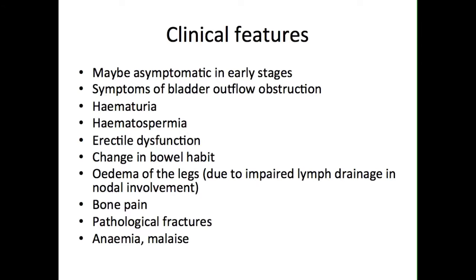These tumours, unlike T3 and T4 tumours, are unlikely to have associated metastases. T3 and T4 tumours can also present with lower urinary tract symptoms, but may also present with other symptoms as a result of local advancement of the tumour. These can include urinary incontinence and renal failure, due to the involvement of the bladder neck and occlusion of the ureters.